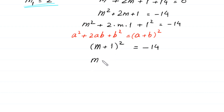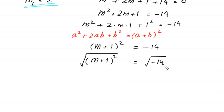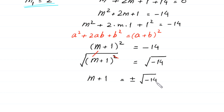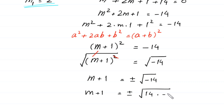Now we take the square root of both sides. The left side gives m plus 1, and the right side gives the square root of negative 14, which equals plus or minus the square root of negative 14. We can write negative 14 as 14 times negative 1.